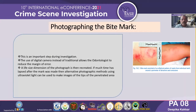A very important step in any bite mark investigation is photographing the bite mark. This is especially important in rape cases, where many kinds of bite marks are found at different areas of the victim's body. A digital camera can be used instead of traditional methods, which allows the odontologist to reduce the margin of error and recreate all life-size dimensions of the photograph. If much time has lapsed or if the bite mark is fading, an alternative photography method using UV light can be used to capture images of the penetrated area.